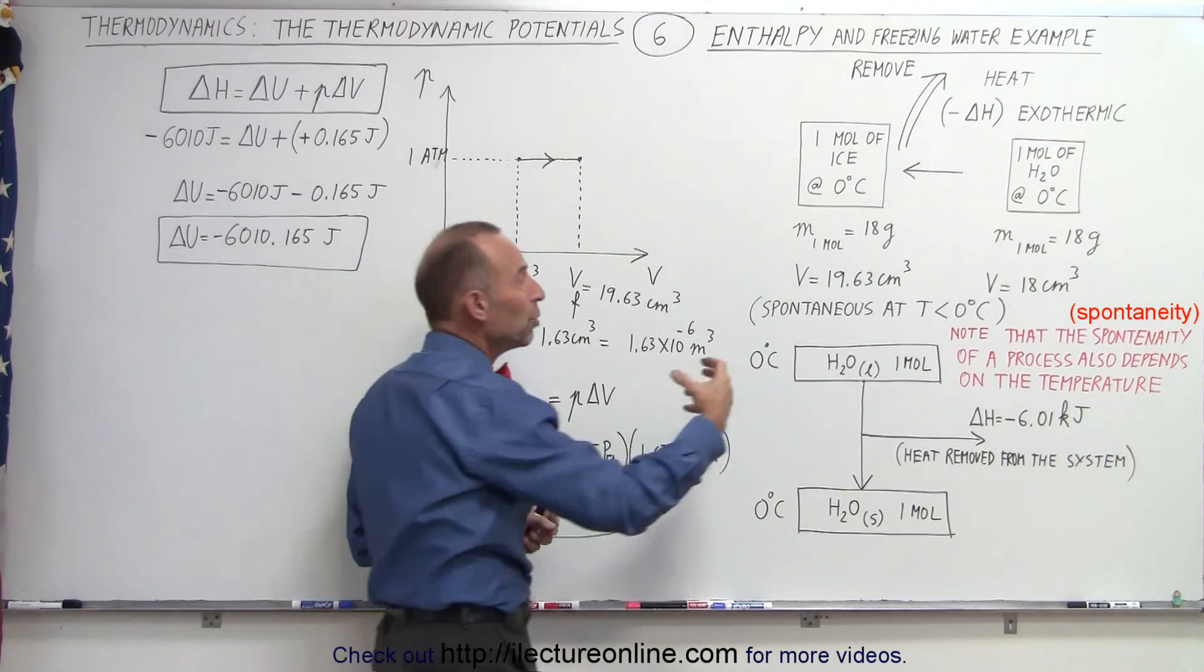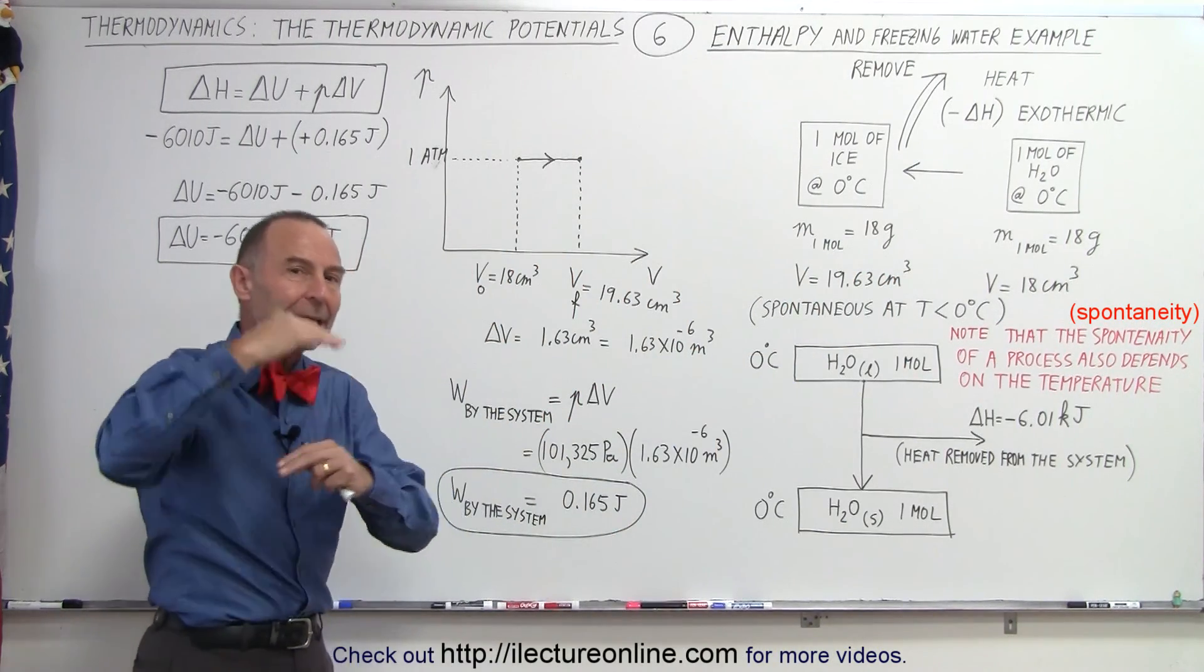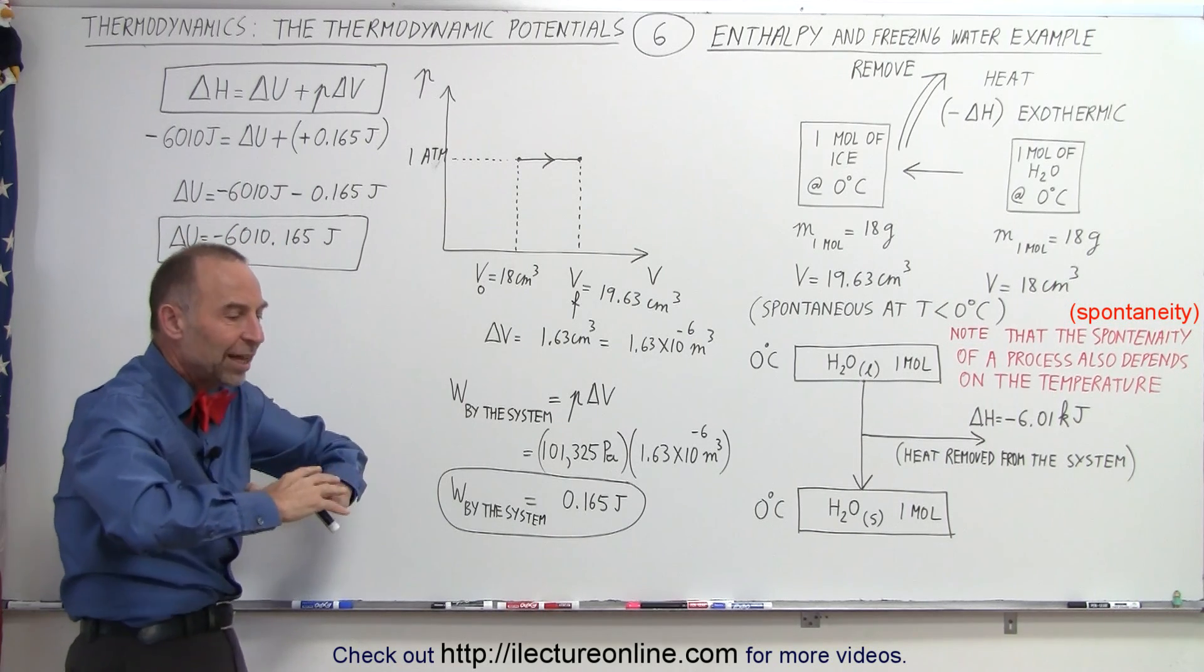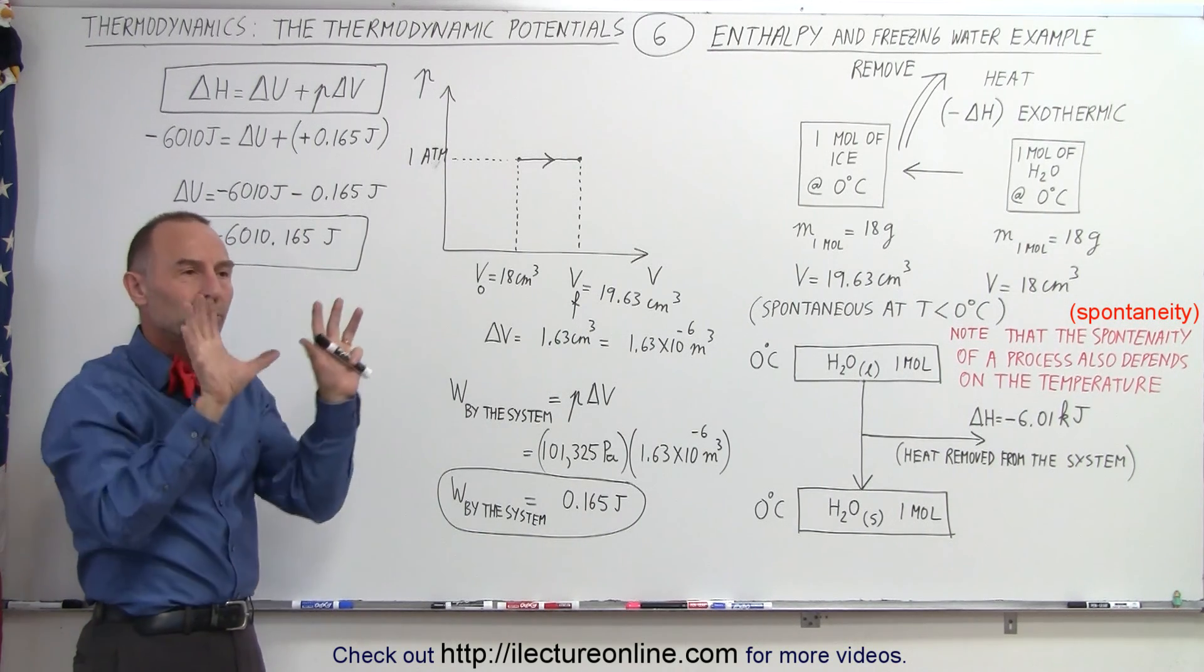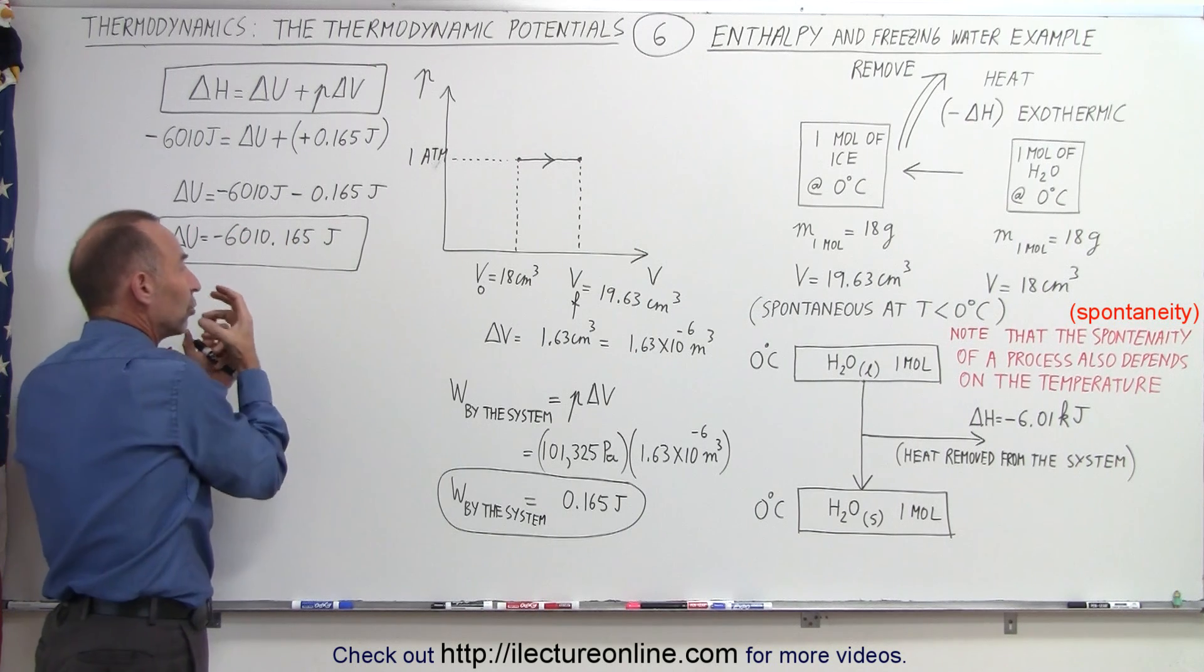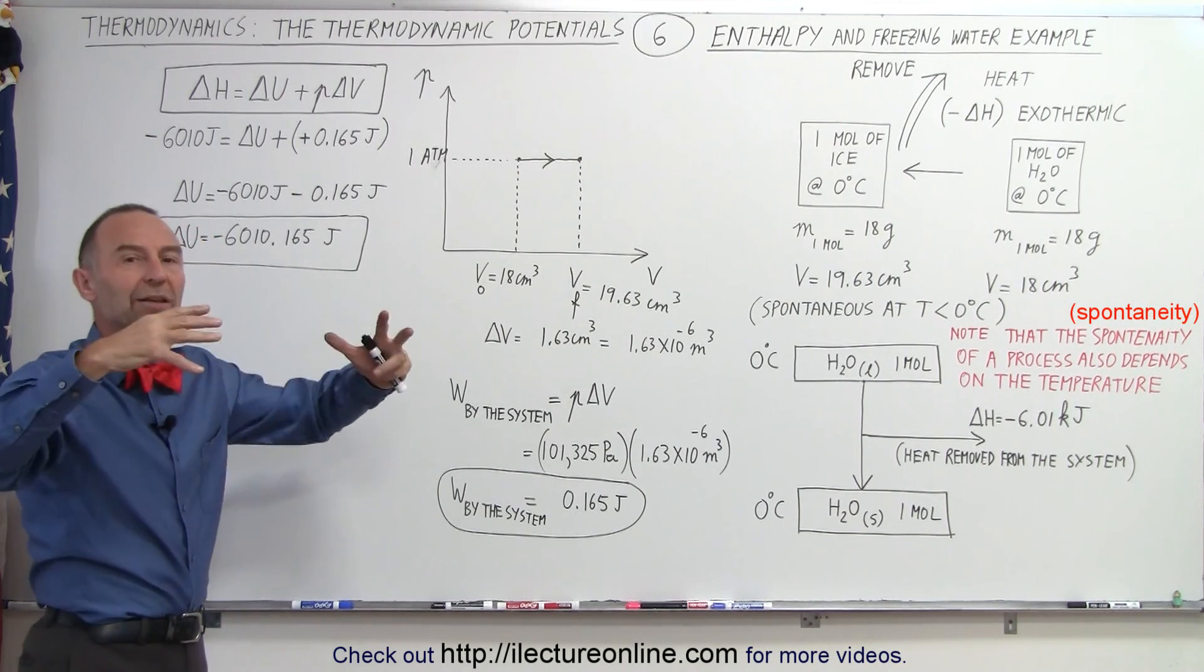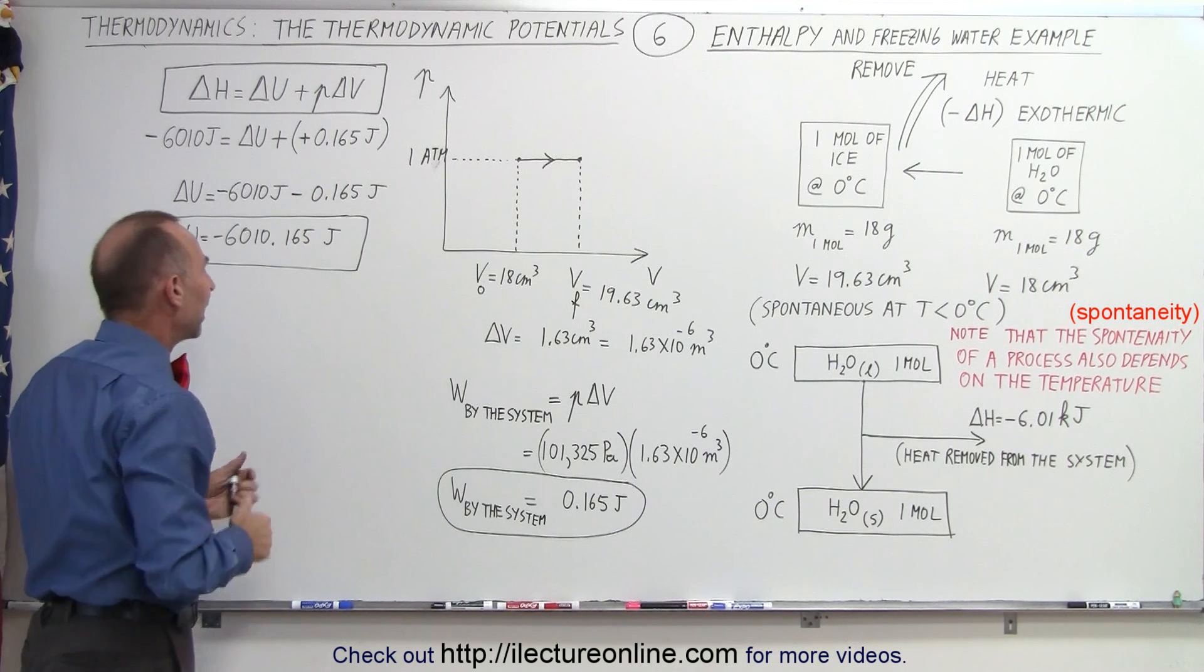In other words, even though we removed 6,010 joules from the system, the internal energy dropped by a greater amount, by an additional 0.165 joules, because not only was heat removed turning water into ice, also since the substance, water expands upon freezing, it had to push against the atmosphere, push atmosphere away. That required work, which required additional energy, which means the amount of heat lost by the system, the change in internal energy was even greater than the heat removed via enthalpy. It also required additional heat to push against the atmosphere for total change in internal energy being equal to the change in enthalpy plus the work done by the system.